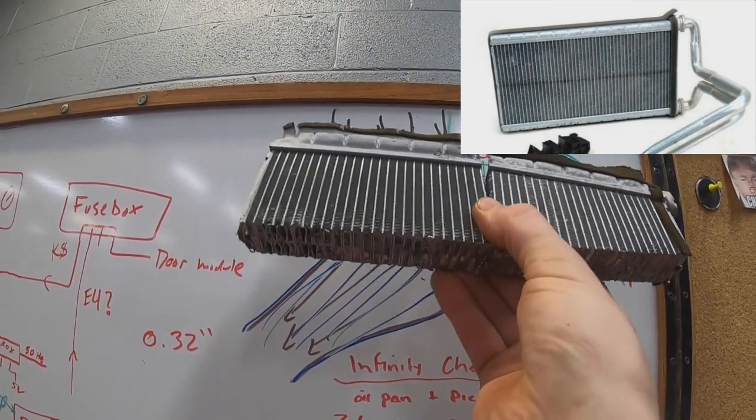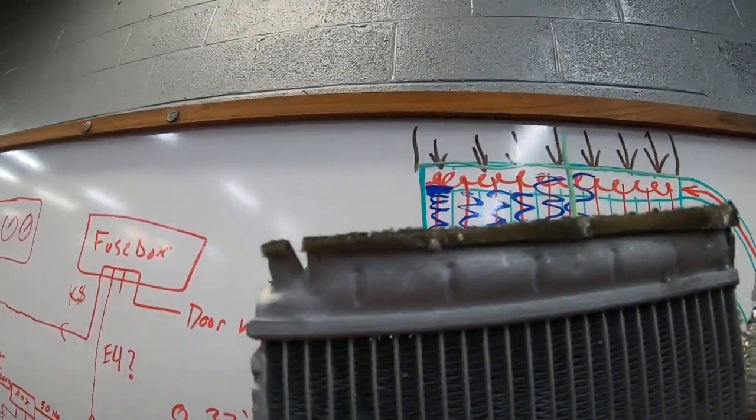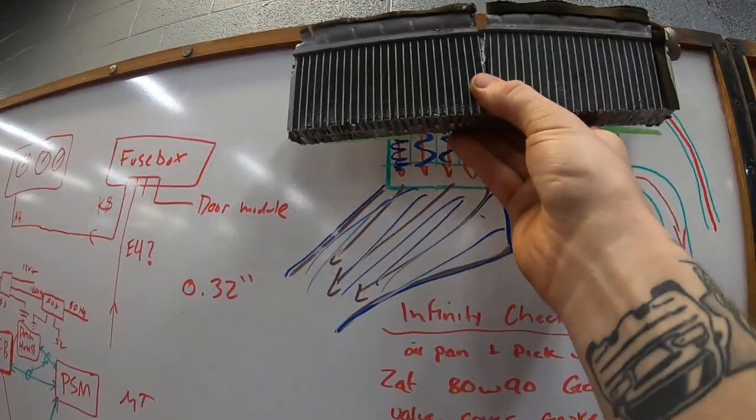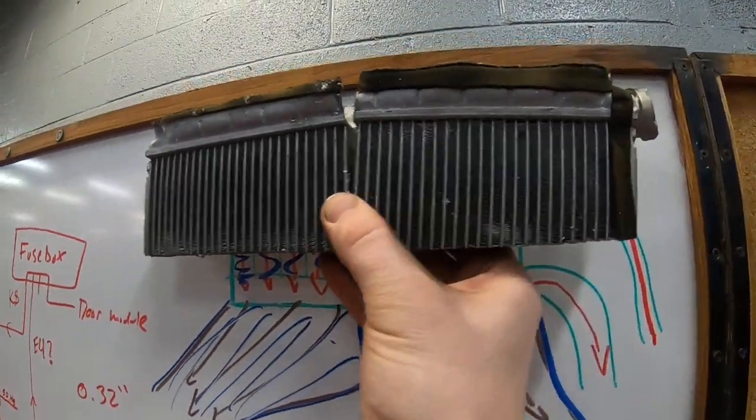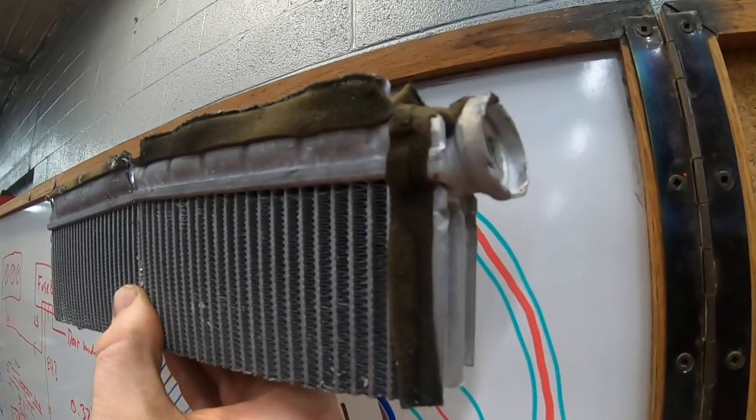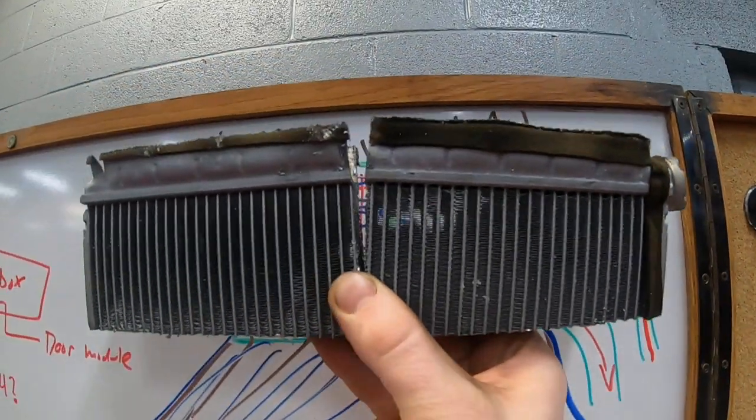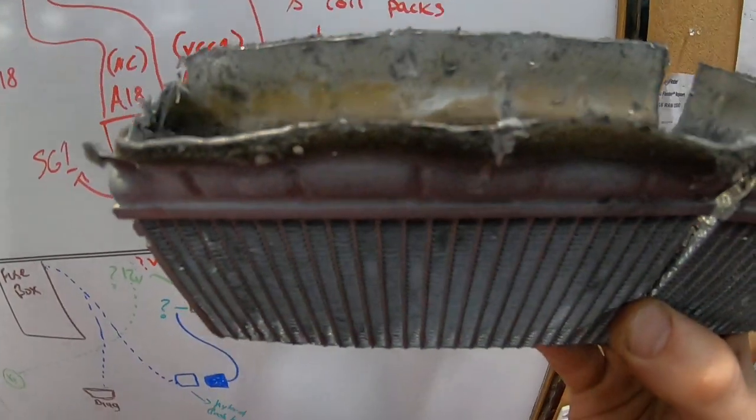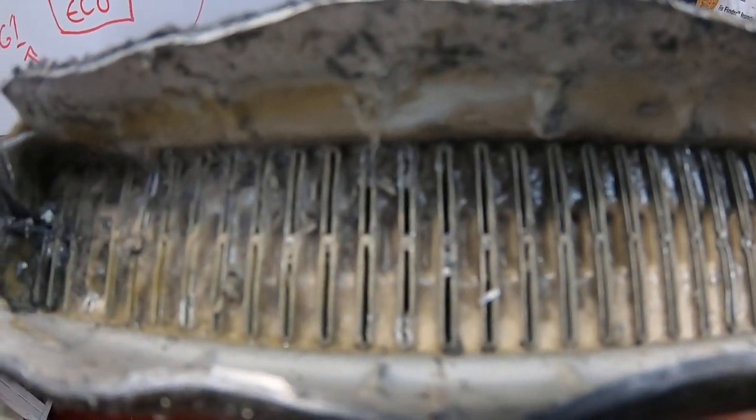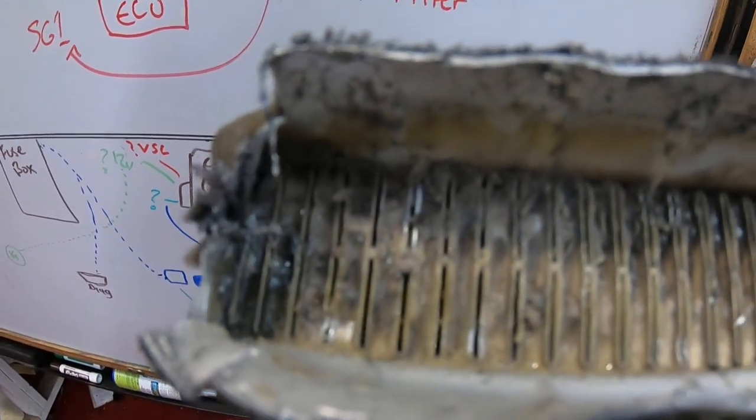So we cut it in half and then we cut it into quarters. So you can see where that would have been basically the top of it. This end here is where the water was coming in. And when you look down inside of it, you can see all of the crap in there just blocking up all of the channels in it.